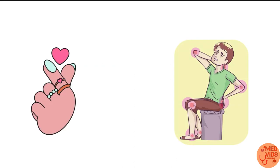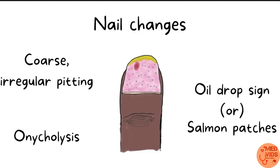Along with skin lesions, psoriasis also involves the nails and joints. Nail changes in psoriasis include coarse and irregular pits in the nail due to defective development, and discoloration of the nails. There can also be onycholysis, which means separation of the nail from the nail bed. The pathognomonic sign in psoriatic nail change is the oil drop sign, also known as salmon patches, which appears as reddish-yellow discoloration on the nails.